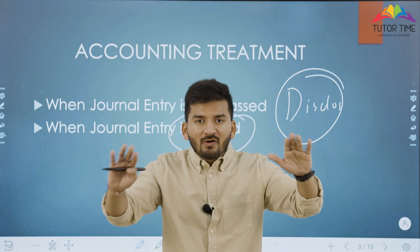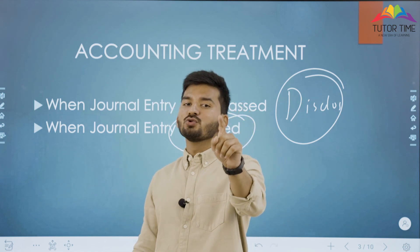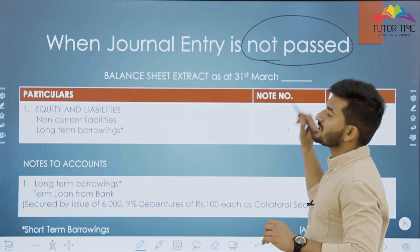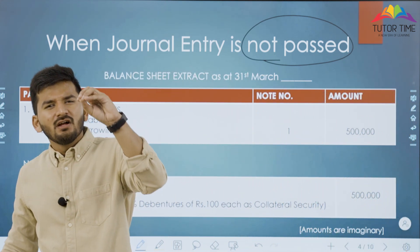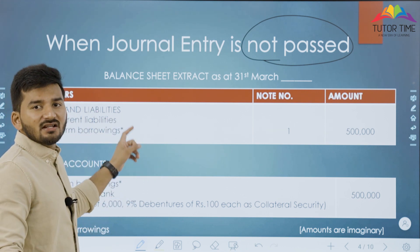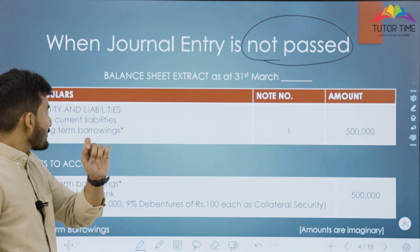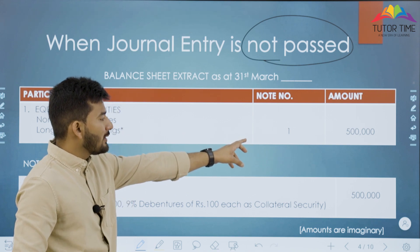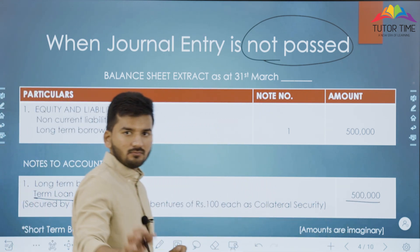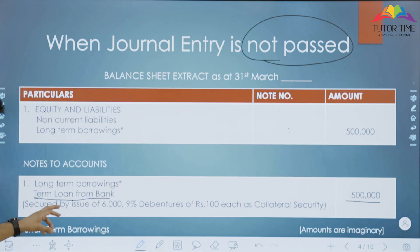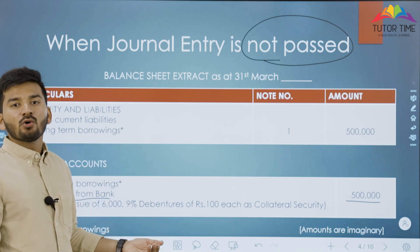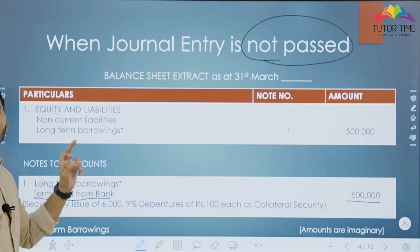When journal entry is not passed, it is mandatory to disclose under long-term borrowings — for example, a loan of 5 lakh. Now, a student may ask: can't it be short-term? It is possible — here we assume long-term borrowings, but if it's short-term borrowings, you change the head from non-current liability to current liability.